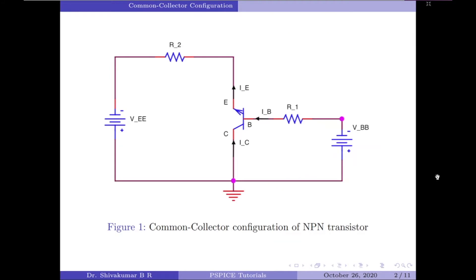At the input, which is the base to collector, we have VBB. At the output, which is across the emitter to collector, we have VEE. The input resistance is denoted as R1 and the load resistance is denoted as R2. In the common collector or grounded collector configuration, the collector is connected to ground through the supply, so the collector terminal is common to both the input and output. The input signal is connected directly to the base terminal while the output signal is taken from across the emitter load resistor.